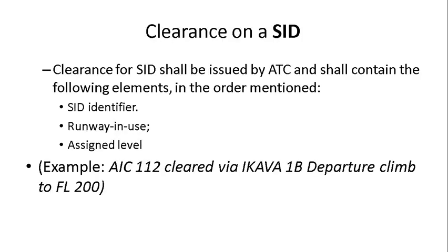For clearance on a SID, one must be familiar with the applications of SID clearances using level and speed phraseologies. Clearance for a SID shall be issued by ATC in this order: SID identifier, runway in use, and assigned level. For example: 'Air India 112, cleared via ECAO 1 Bravo departure, planned to flight level 200.'